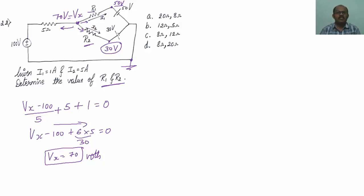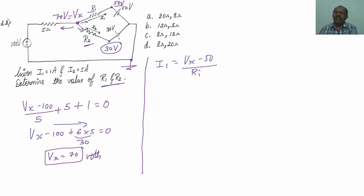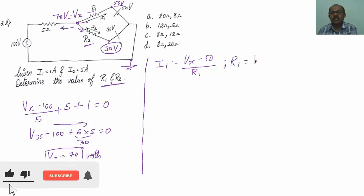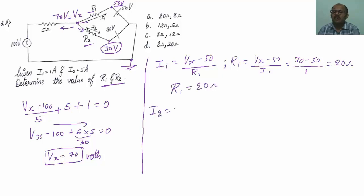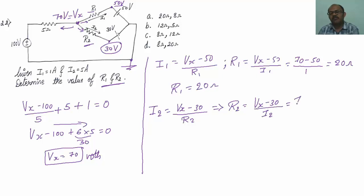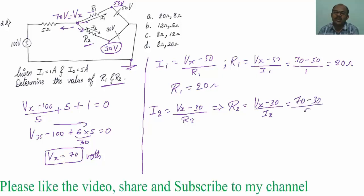Now I know Vx = 70 volts. R1 = (Vx - 50)/I1 = (70 - 50)/1 = 20 ohms. For R2: R2 = (Vx - 30)/I2 = (70 - 30)/5 = 40/5 = 8 ohms. So R1 = 20 ohms and R2 = 8 ohms, and the correct option is A.